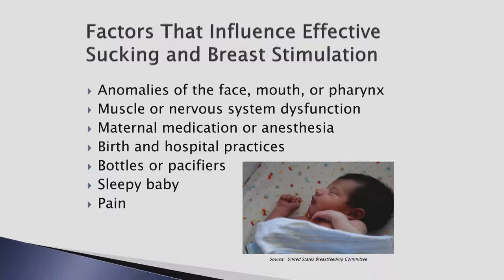Muscle or nervous system dysfunctions — such as Down syndrome, cerebral palsy, muscular dystrophy, intracranial hemorrhage, prematurity, asphyxia, or an infection affecting the central nervous system — can affect breast stimulation or milk transfer. Maternal medications or anesthesia during labor or pregnancy can lead to the infant or the mother being too sleepy, causing misfeedings. Birth and hospital practices such as vacuum extraction or separation of baby and mother can lead to feeding issues. Bottles and pacifiers can lead to misfeedings, disruption of effective suckling and breastfeeding, decreased milk supply, and undue engorgement. Effective suckling and breast stimulation can also be reduced by sleepy infants, missed feedings, labor drugs, or prolonged separation from mothers.